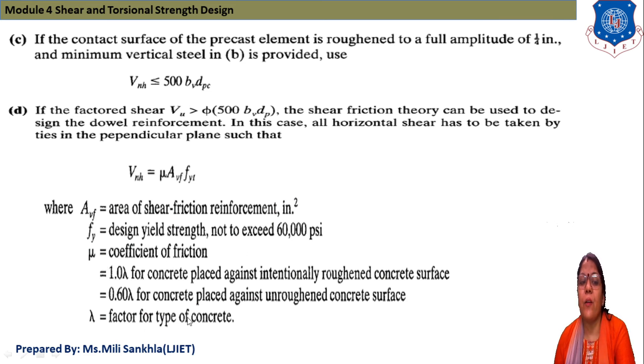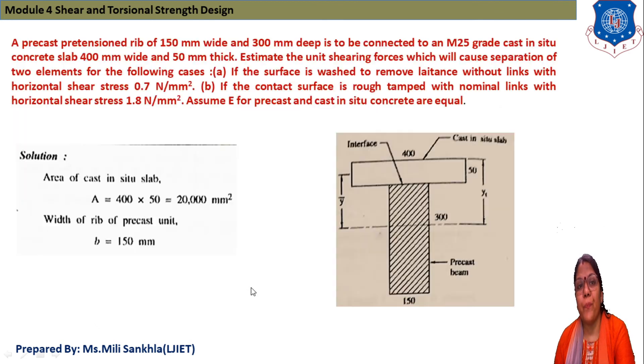Now we solve an example of horizontal shear strength. First we read the data: a precast pretensioned rib of 150 mm width and 300 mm depth is to be connected to an M25 grade cast-in-situ concrete slab, 400 mm width and 50 mm thick. Estimate the unit shear force which will cause separation of two elements if the surface is washed to remove laitance without links.